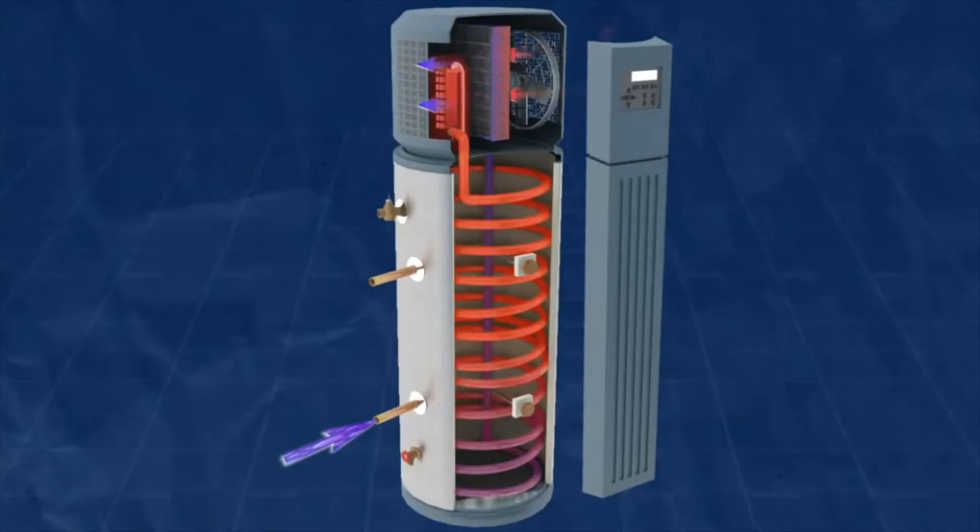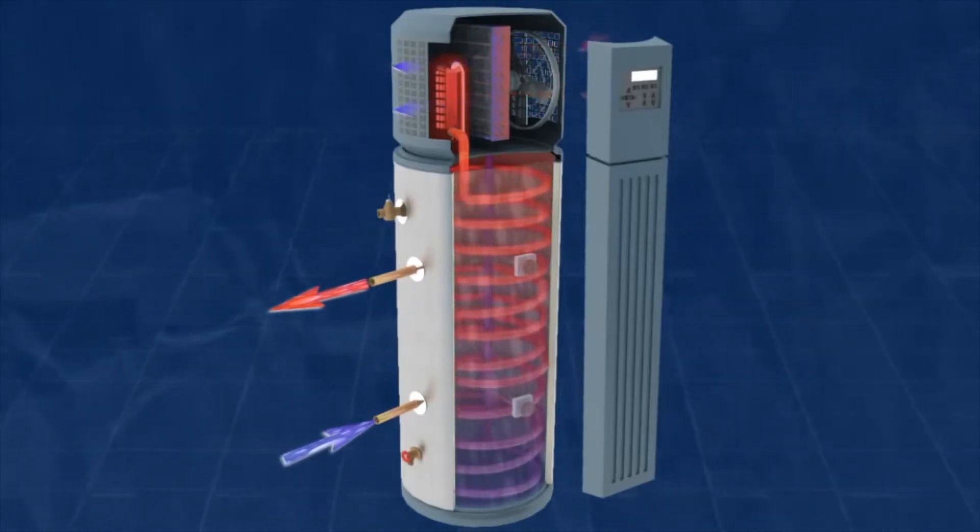Cold water is cycled to the bottom of the water heater tank where it absorbs heat from the refrigerant and coil system and then leaves the tank and distributed to your home as hot water.